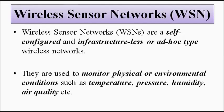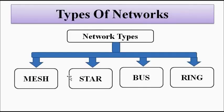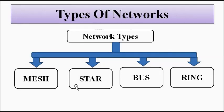These sensors and devices can be connected through various types of network topologies — this we have discussed in data communication and computer networking. It can be mesh topology, star topology, bus topology, or ring topology, depending on the requirement, cost constraints, and operational requirements. Based on all these factors, it has to be decided which type of topology suits this whole wireless sensor network architecture.